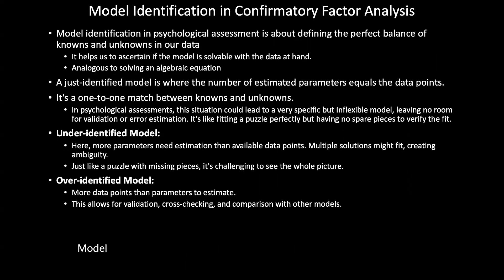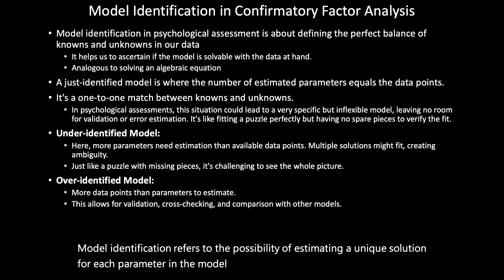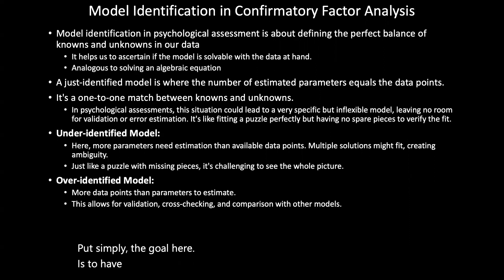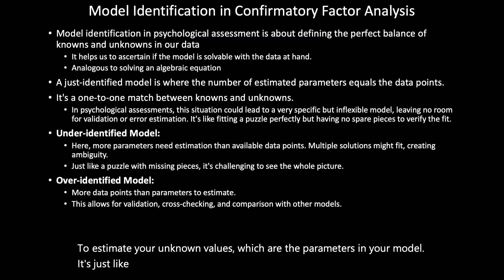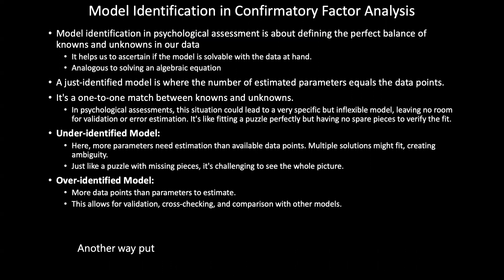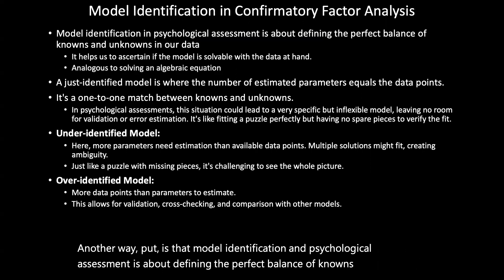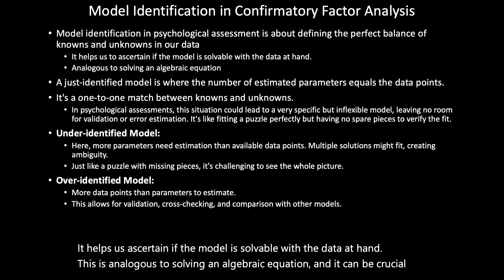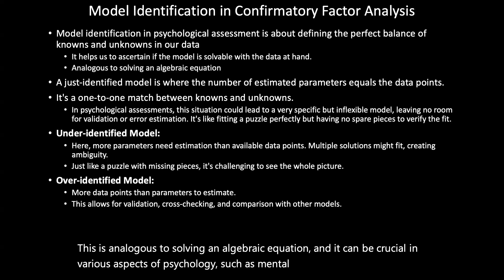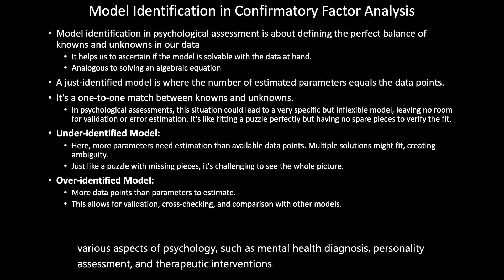Model identification refers to the possibility of estimating a unique solution for each parameter in the model based on the available data. The goal is to have enough known values — data from your sample or observations — to estimate your unknown values, which are the parameters in your model. It's just like solving an algebraic equation. Model identification in psychological assessment is about defining the perfect balance of knowns and unknowns in our data, helping us ascertain if the model is solvable with the data at hand. This is crucial in mental health diagnosis, personality assessment, and therapeutic interventions.